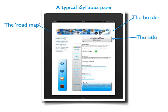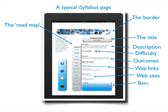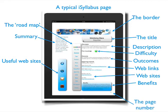We have a road map of where we're going. Keynote, the second item down, is in bold. We have a description of what will be covered, an indication of the difficulty — green means no prior knowledge needed — here are the outcomes, the web links in terms of supporting materials, some useful websites, the benefits, a summary, and finally the page number.